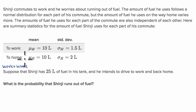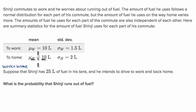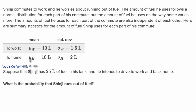If you have two random variables described by normal distributions and you define a new random variable as their sum, the distribution of that new random variable will still be a normal distribution, and its mean will be the sum of the means of those other random variables. So the mean of work plus home is going to be equal to 20 liters.